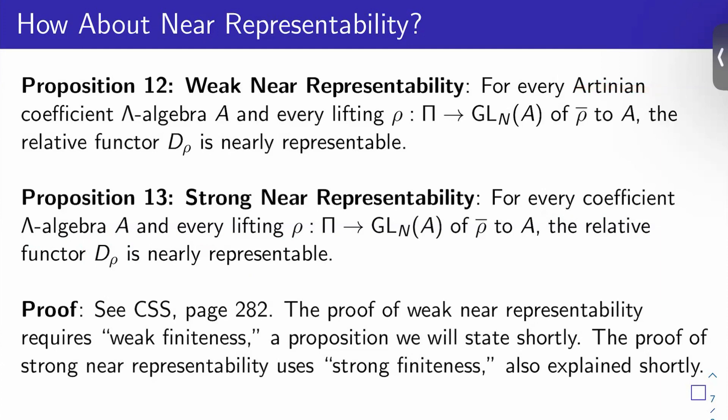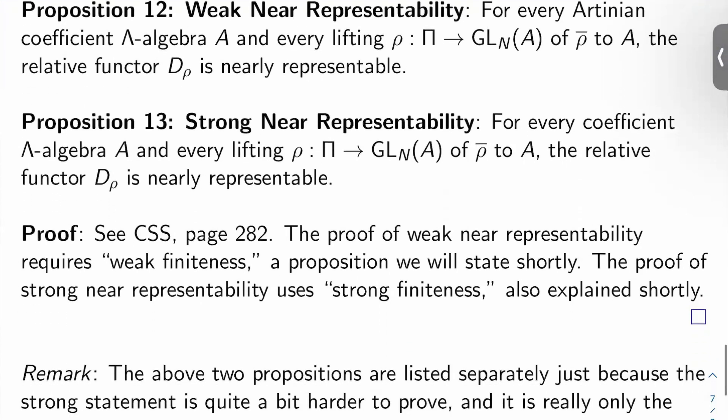So for a proof, you can see CSS page 282. And again, the proof of weak near representability requires a condition called weak finiteness, which we'll talk about later. And the proof of strong near representability uses a condition called strong finiteness, which we'll also explain later. And again, the strong statement is just quite a bit harder to prove. So it's maybe worth listing them separately.